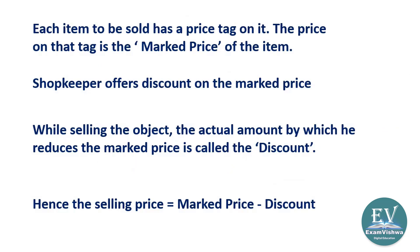Now let us understand something basic about how things are sold in a shop or market. Every item has its own price tag — that price marked on the item is called the market price. The shopkeeper then gives a discount on the market price.